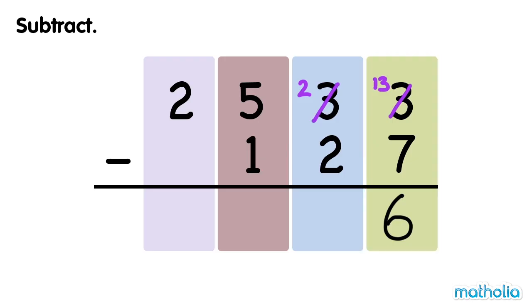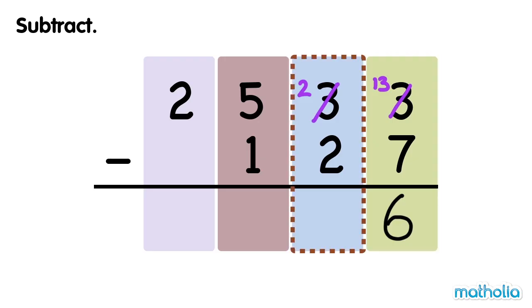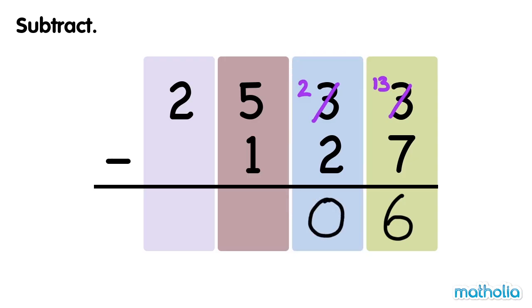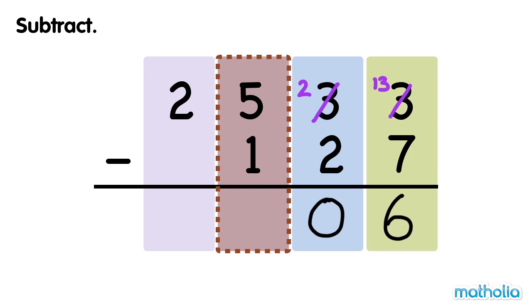Next, subtract the tens. 2 tens minus 2 tens equals 0 tens. Now subtract the hundreds. 5 hundreds minus 1 hundred equals 4 hundreds.